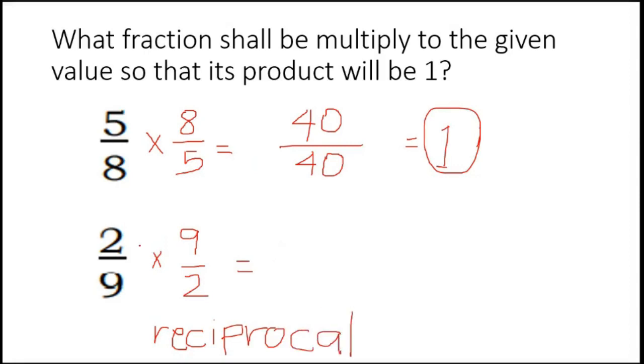So 2 times 9 is 18, and 9 times 2 is 18. So if we're going to simplify it, 18 divided by 18, the answer is 1.